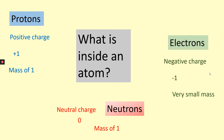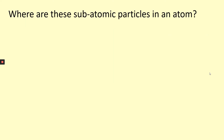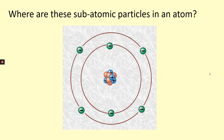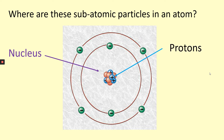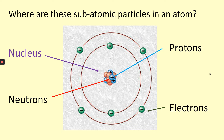The next thing we need to look at is where these particles are in an atom. This is a simple picture of an atom. In the middle of the atom, we have a nucleus. You can see in the picture that in the nucleus there are positive particles — these are the protons. The other particles don't have a charge, so we know these must be the neutrons. Around the outside are our electrons in shells. You can see from the picture that the atom is mostly empty space, with the nucleus in the middle and the shells on the outside, and most of the mass is in the middle.